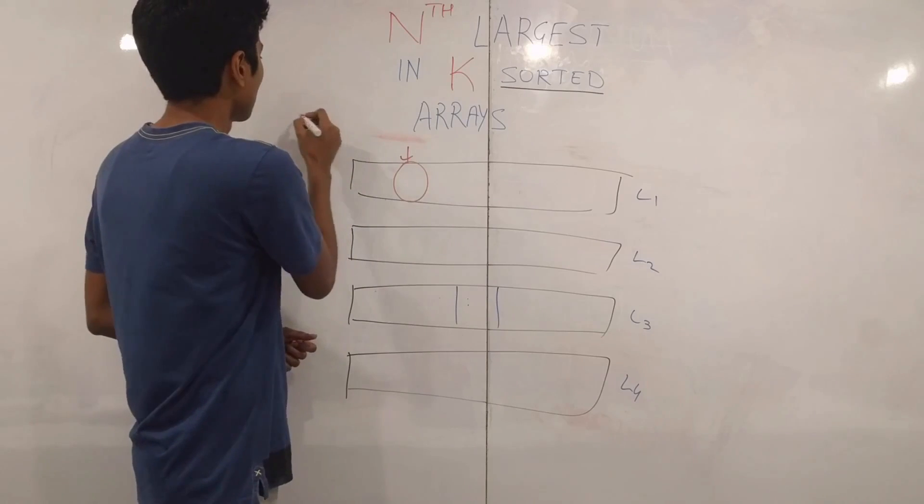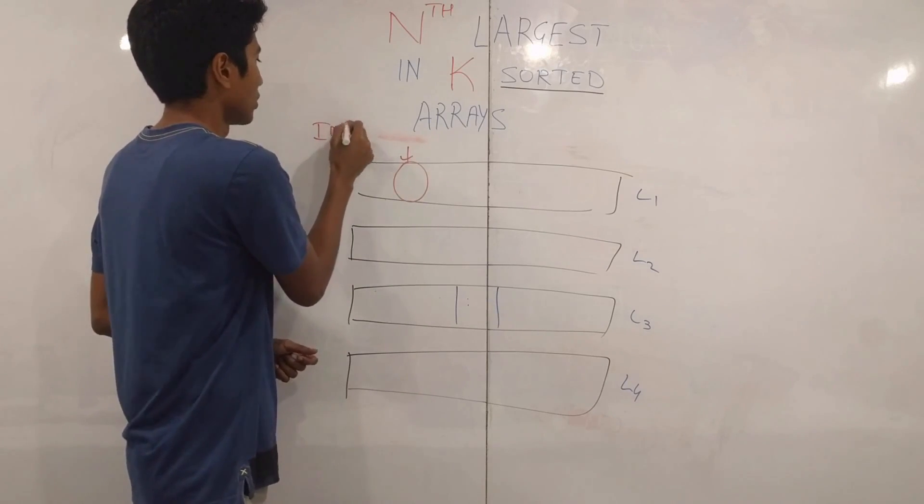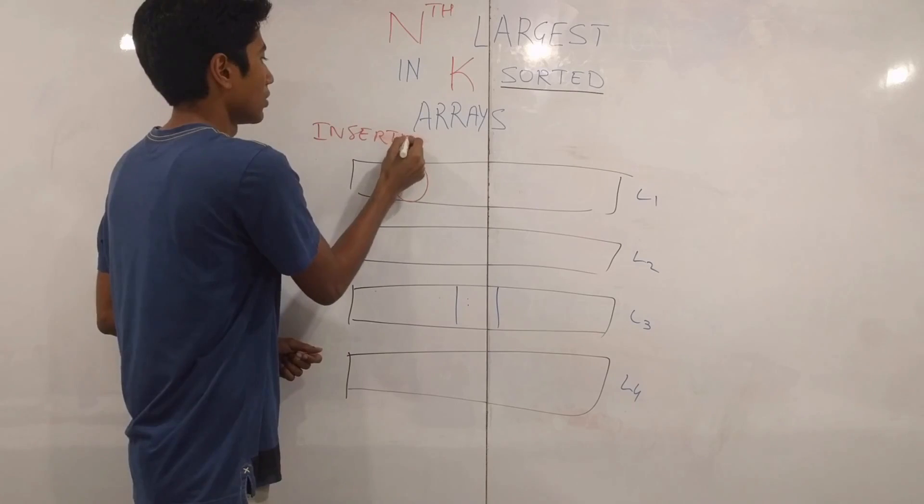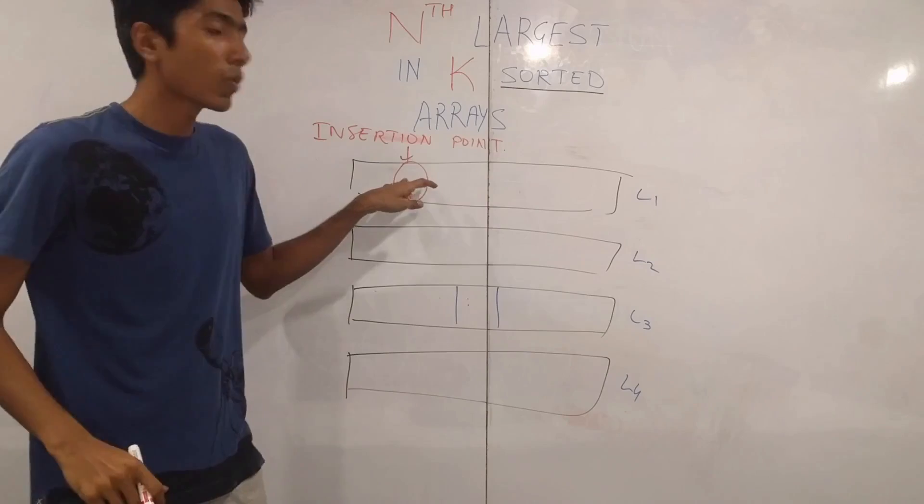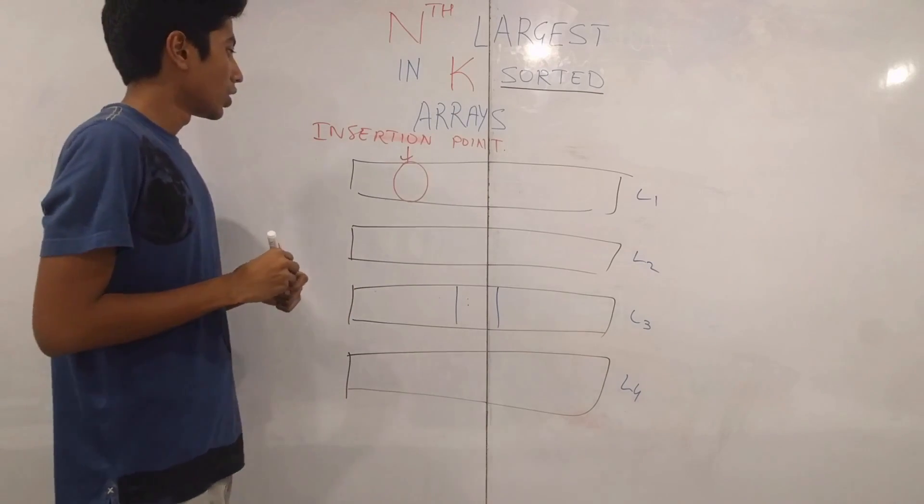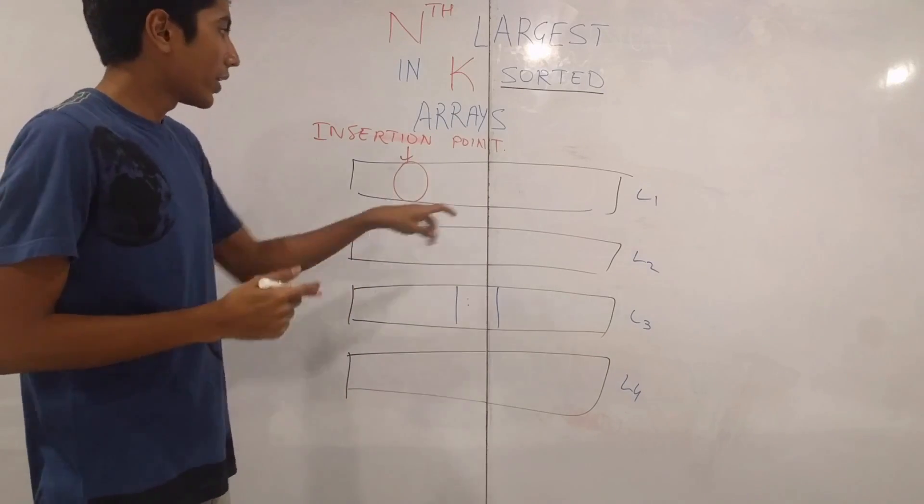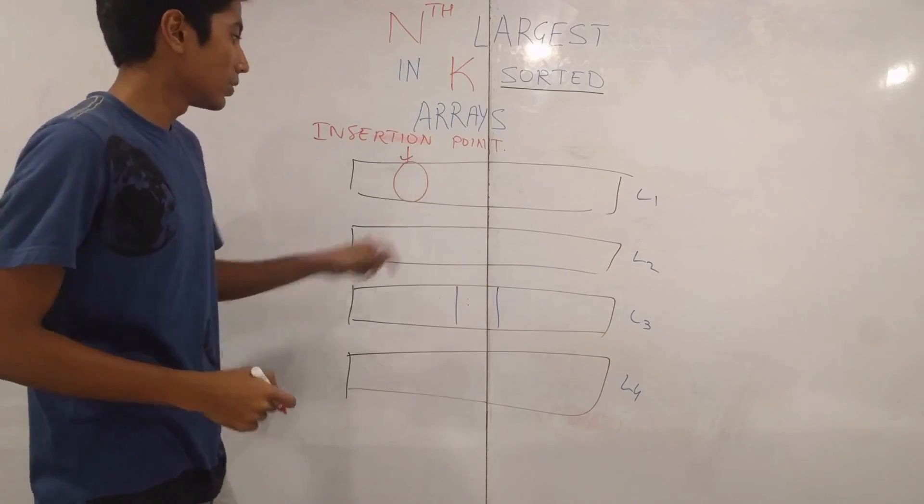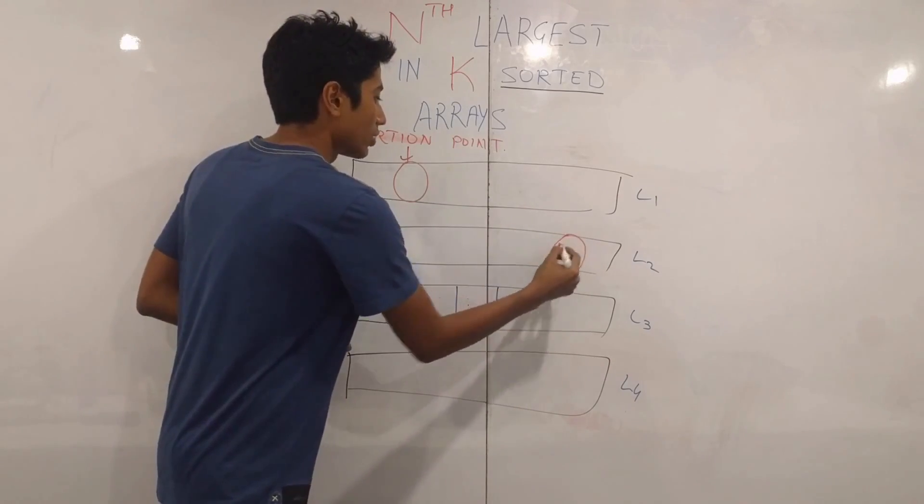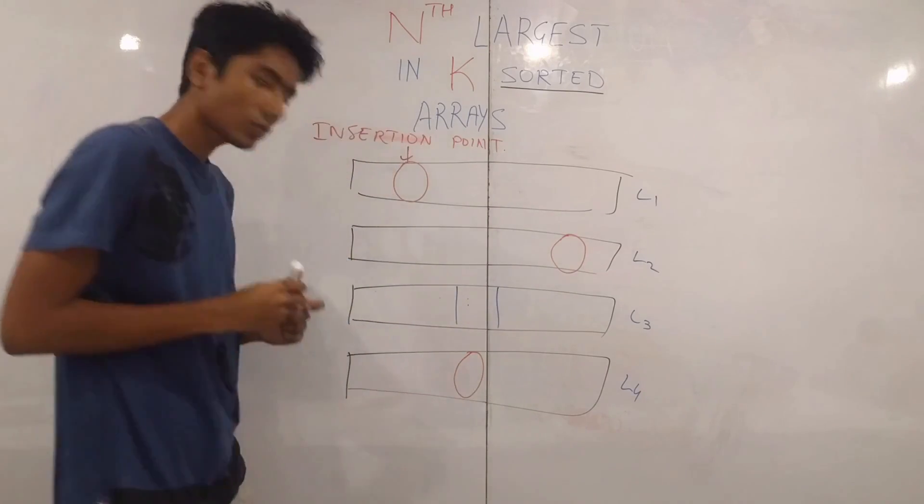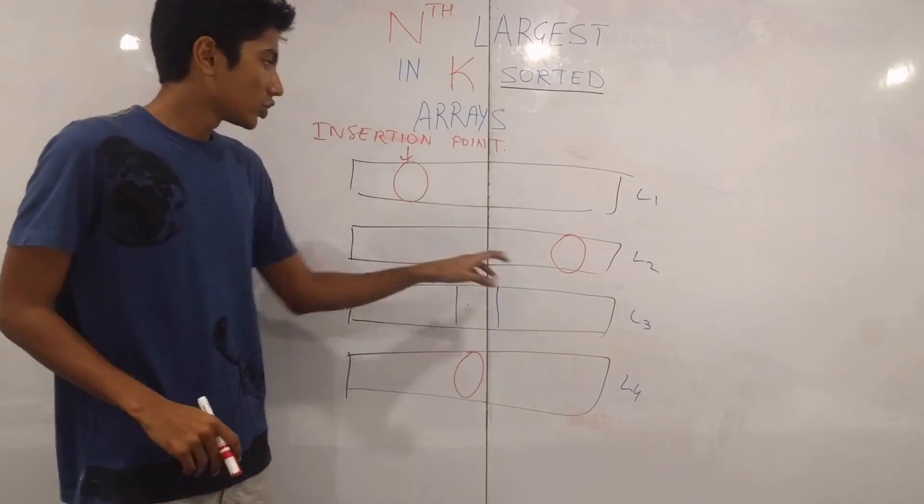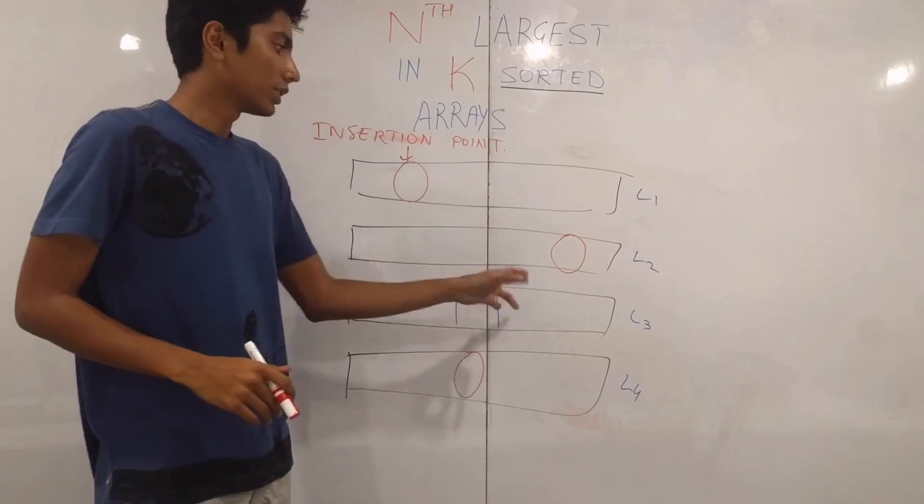It is related to where it should have been put in which is called the insertion point. Let me write this large. So insertion point is where it should have been. Let's say the insertion point of the first array for this element is here. For the second array we have somewhere on the right. And for the third array we have somewhere in the center.